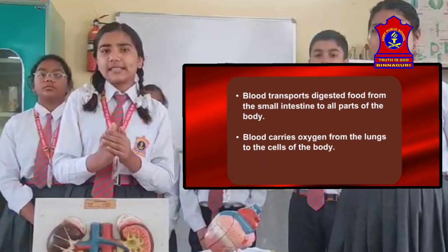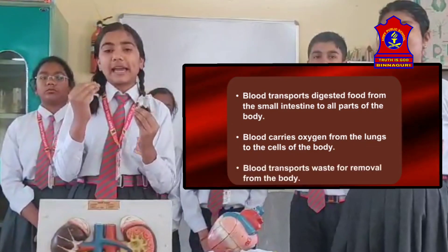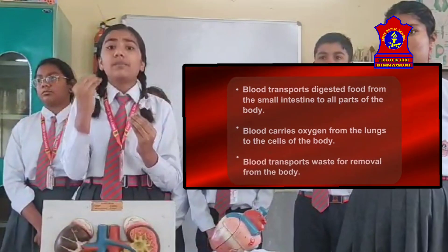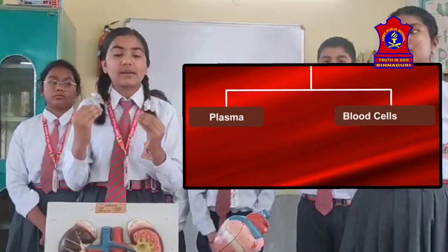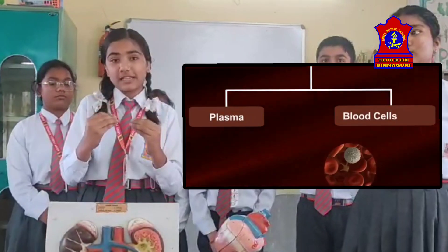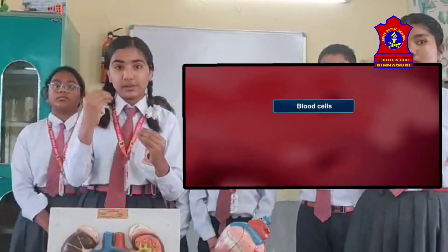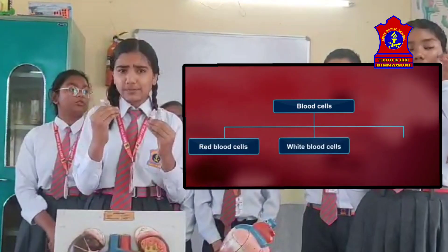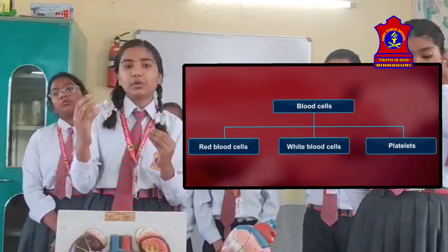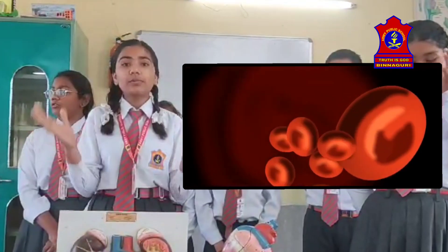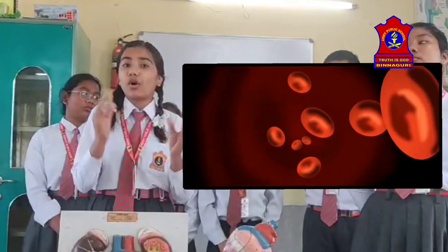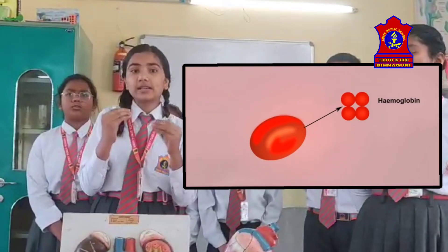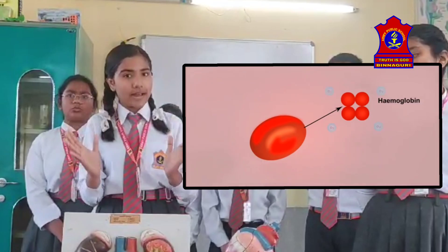Now the question is: how does blood carry major substances? Blood has a fluid part called plasma, in which different types of cells are present. One of them is RBC, known as red blood cells, in which a red pigment called hemoglobin is present. Hemoglobin binds oxygen and transports it to all parts of the body. The presence of hemoglobin makes the blood appear red.